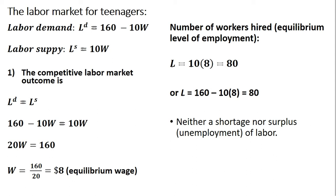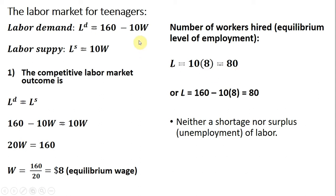In the competitive labor market, we set the quantity demanded of labor equal to the quantity supplied. Setting both equations equal to one another and collecting the wage term — adding 10W to both sides — we get 20W equals 160, which simplifies to an equilibrium wage of $8 an hour. Plugging $8 into either the labor demand or labor supply equation gives an equilibrium level of employment of 80 workers. The labor market clears with neither a shortage nor surplus.